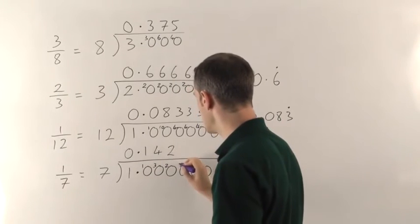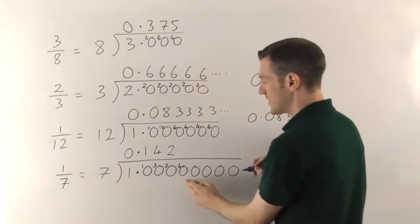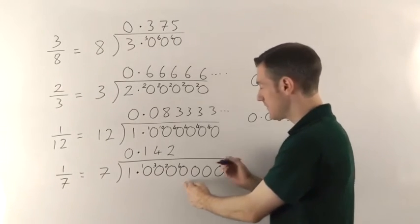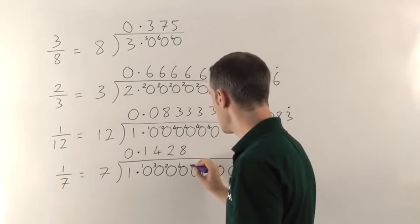7s into 20 go twice. 2 7s are 14. Remainder 6. 7s into 60 will go 8 times. I think 8 7s are 56.